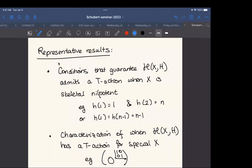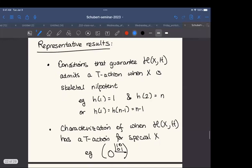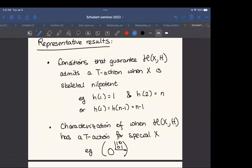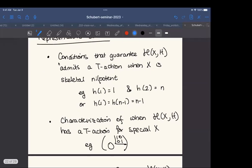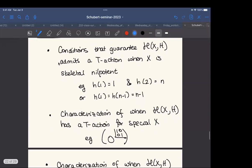So we have, for instance, if X is skeletal nilpotent, what are some conditions that guarantee that the Hessenberg variety admits an action of the torus? So for instance, one kind of condition, h of 1 equals 1, h of 2 equals n. Another kind of condition, h of 1 equals n minus 1, h of 2 equals n minus 1, dot dot dot, h of n minus 1 equals n minus 1, and h of n equals n. So these are actually pretty restrictive conditions. This is sort of what we expect on some level because having a full torus action is hard to do. So we sort of think that it should not be the case that a lot of nilpotent Hessenberg varieties have a full torus action.